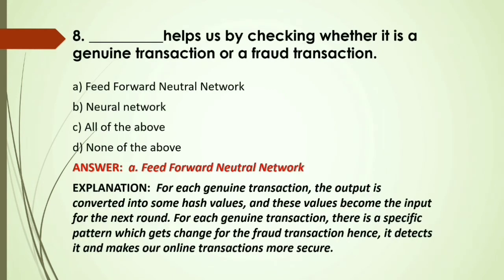MCQ: Dash helps us by checking whether a transaction is genuine or fraudulent — A) Feed-forward neural network; B) Neural network; C) All of the above; D) None of the above. Answer: A, feed-forward neural network. For each genuine transaction, the output is converted into some hash values, and that value becomes the input for the next round. A genuine transaction has a specific pattern that changes for fraud transactions, helping detect fraud and making online transactions more secure.